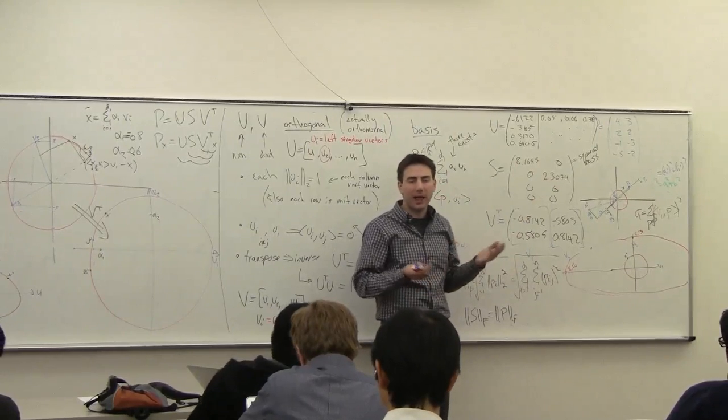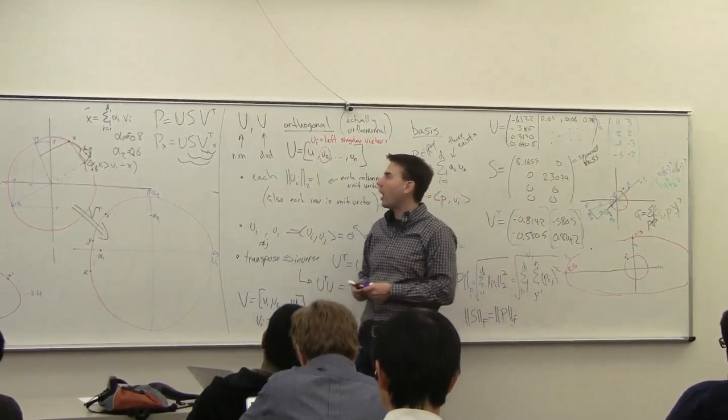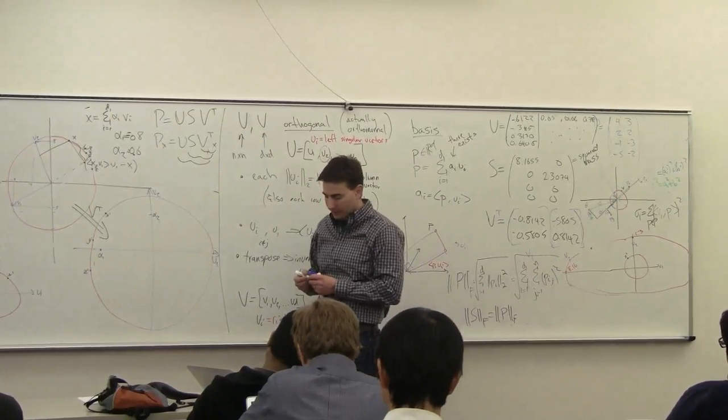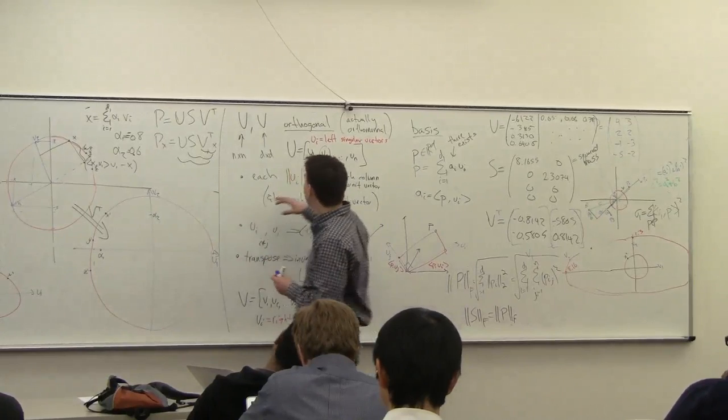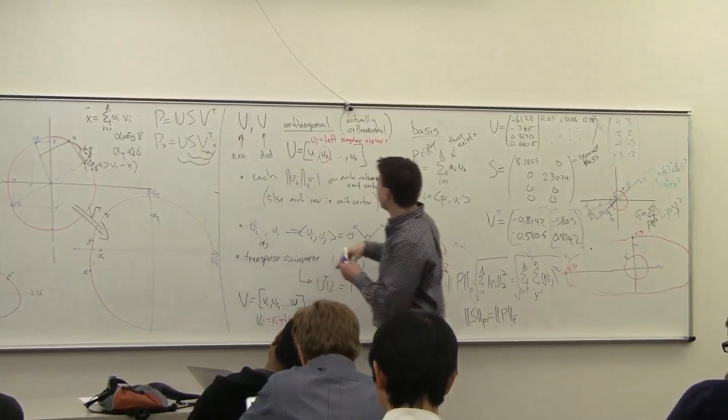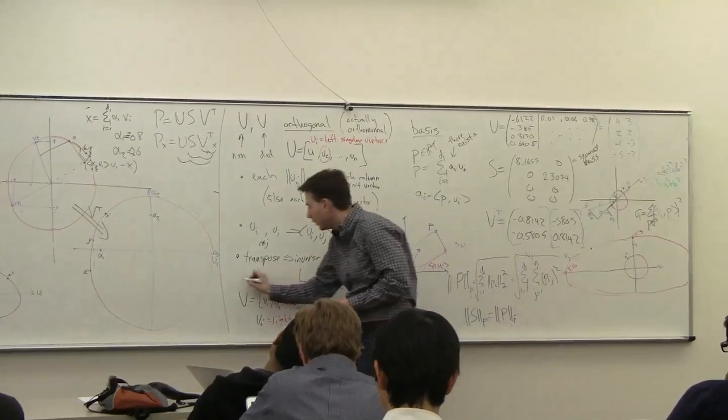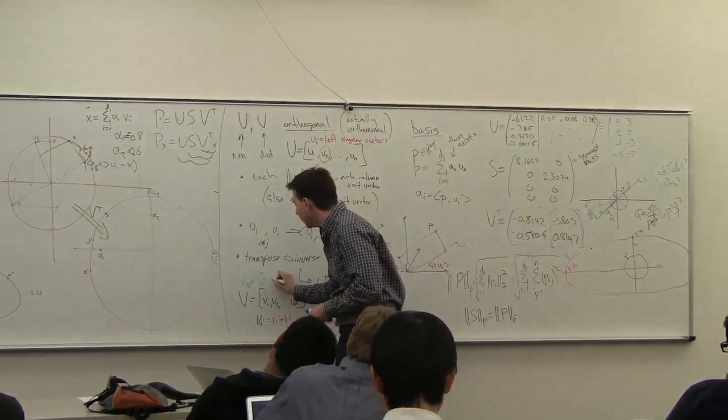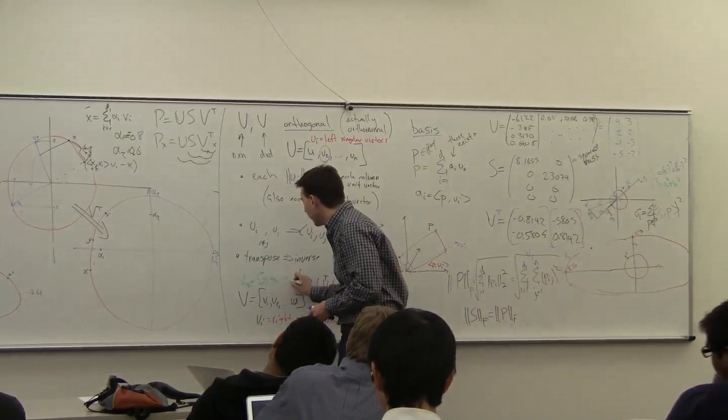So you pick some number K of these singular values, and then what you do is you, instead of looking at U, instead of looking at V, what you do is you take VK, which is equal to V1, V2, up to VK.